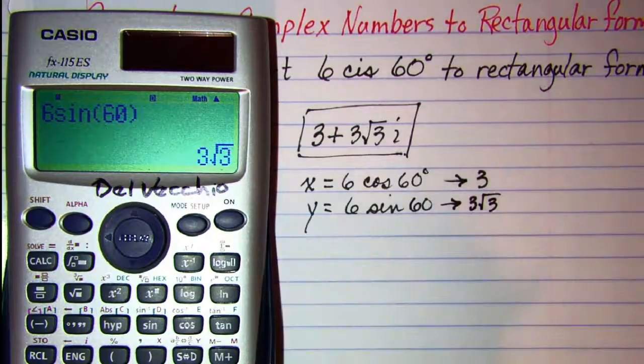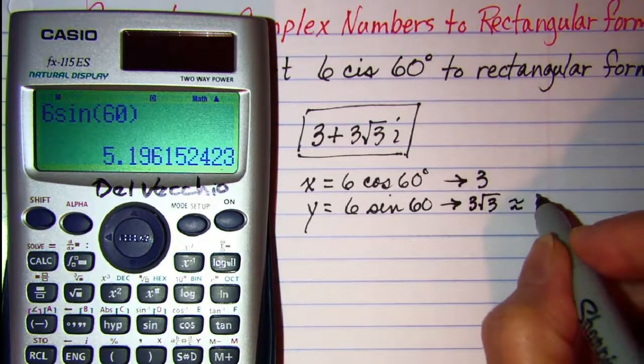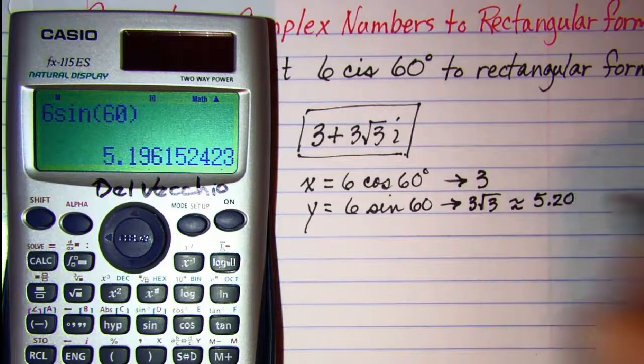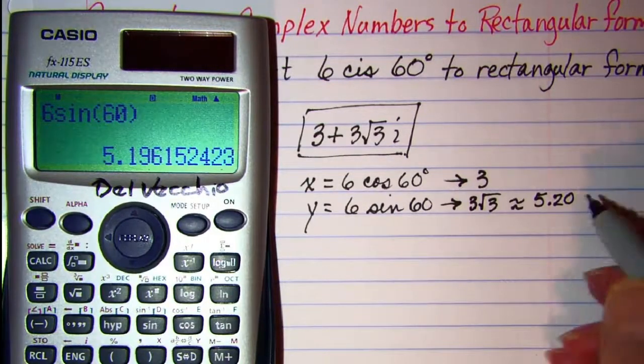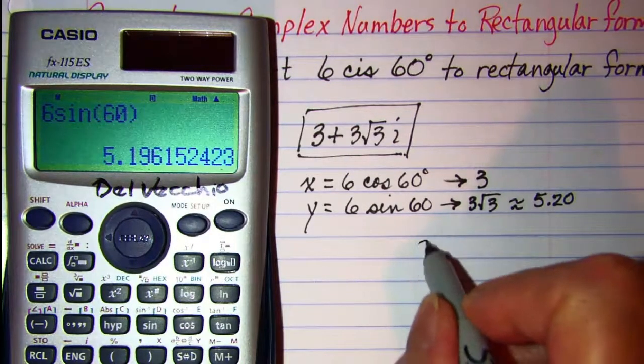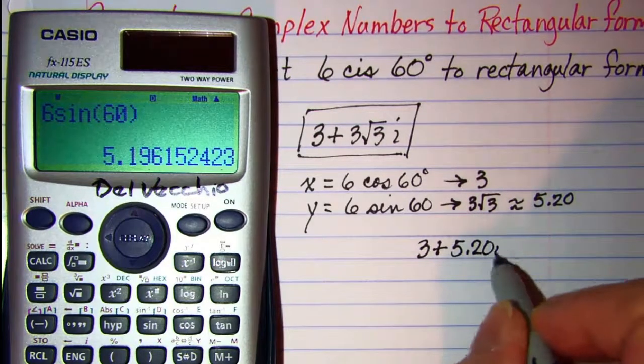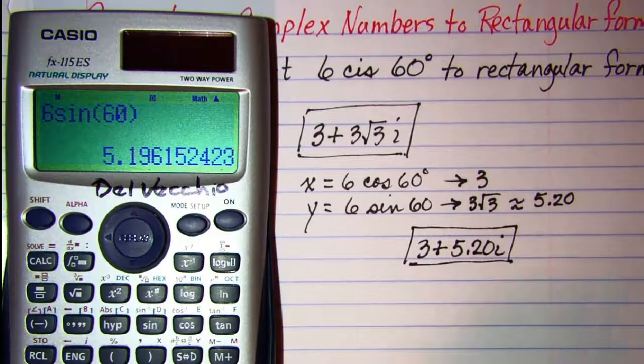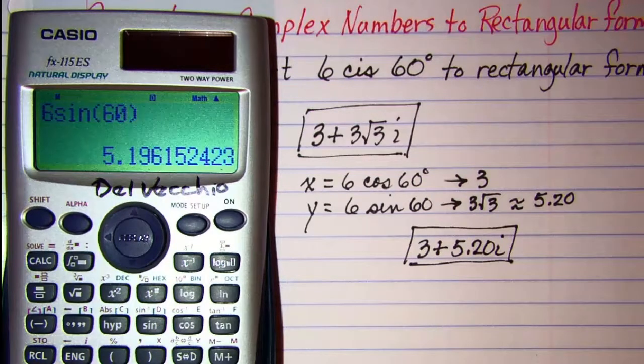Which if we did the decimal would be approximately 5.20. So I could write this as 3 plus 5.20 i. I always try to go with the exact answers though when I have the ability to do that.